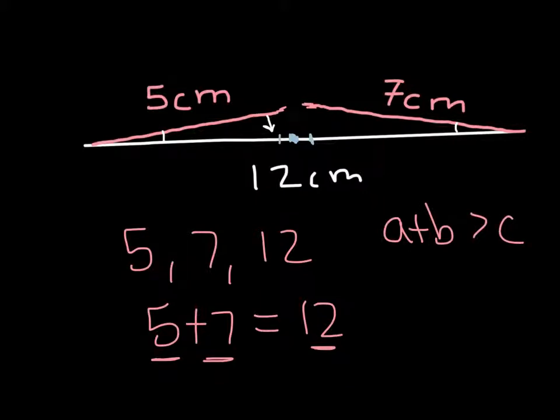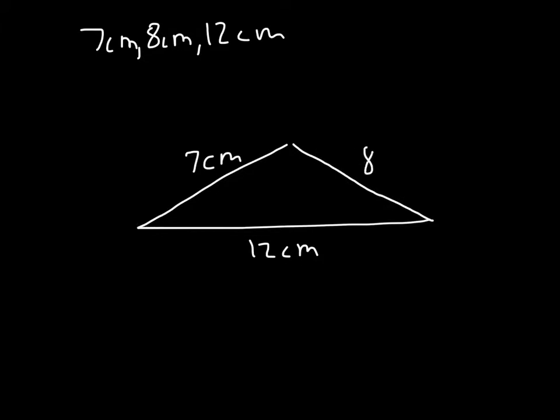In this example, we can use 12 centimeters again. If we have 12 centimeters, we would need some sides that would add up to something larger than 12, so we could do a 7 and an 8. There's really an infinite number of possibilities. A 7 and an 8—I'll just rough hand this. That might be 7 centimeters relative to the 12, this might be 8 centimeters.